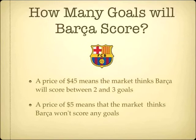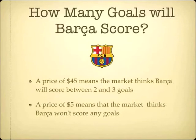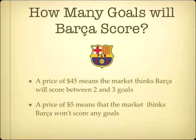In situations where you're trying to predict a percentage, the share would be worth what the percentage turns out to be. For example, you could buy contracts to figure out what percentage of the vote Obama would get. If he gets 65% of the vote, Obama contracts would be worth $0.65. If Romney gets 35% of the vote, his shares would be worth $0.35.